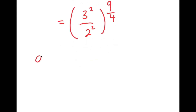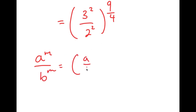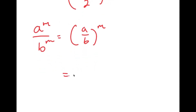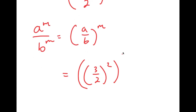If I have something in the form (a to the power of m) over (b to the power of m), this is equal to (a over b) to the power of m. So 3 squared over 2 squared is going to equal (3 over 2) squared, and I still have this to the power of 9/4.